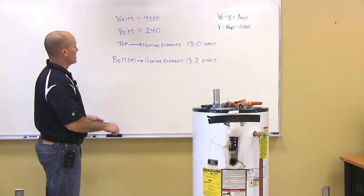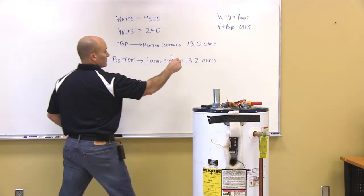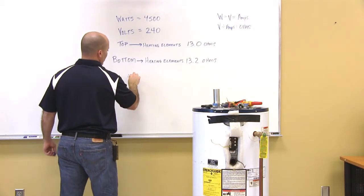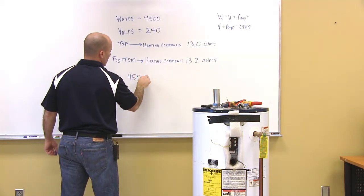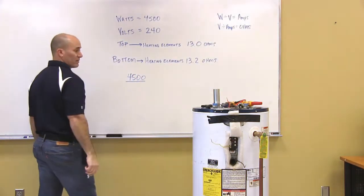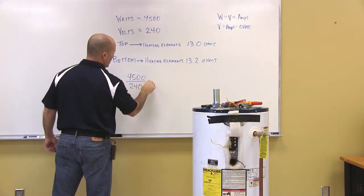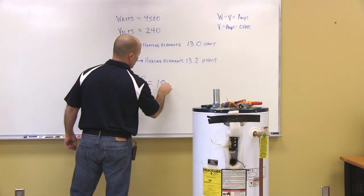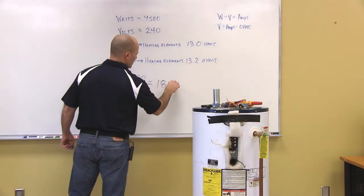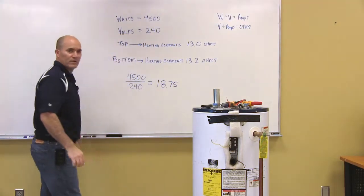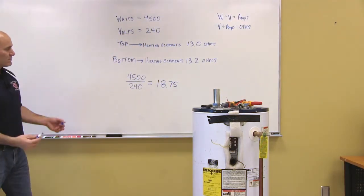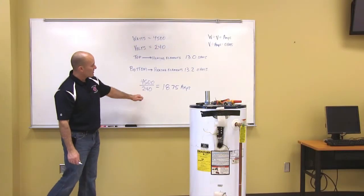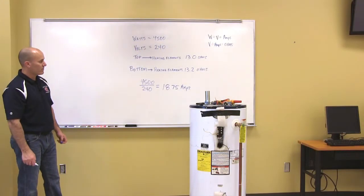So let's do the math. Here's some formulas for you up here: watts divided by volts equals amps. So 4500 divided by 240 equals 18.75. That's my amps, so I just found my amps, 18.75 amps, is our reading.